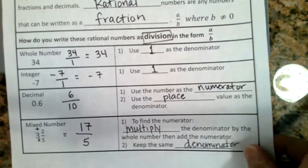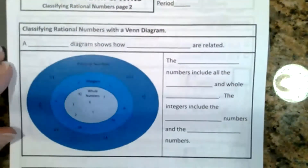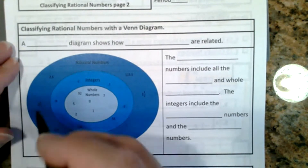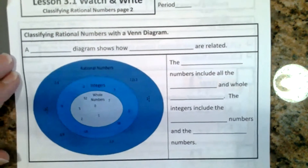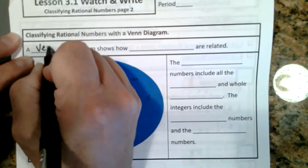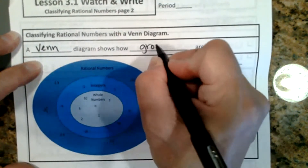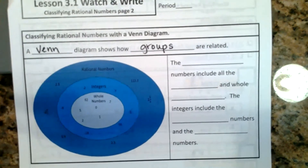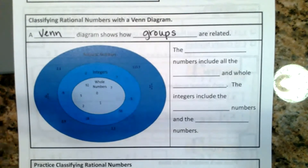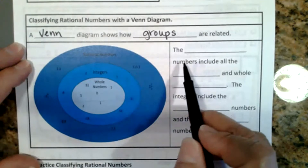Now let's practice classifying rational numbers. On page two of the notes you have a Venn diagram. A Venn diagram shows how groups are related. This Venn diagram is going to show how the group of rational numbers is related to integers and whole numbers.